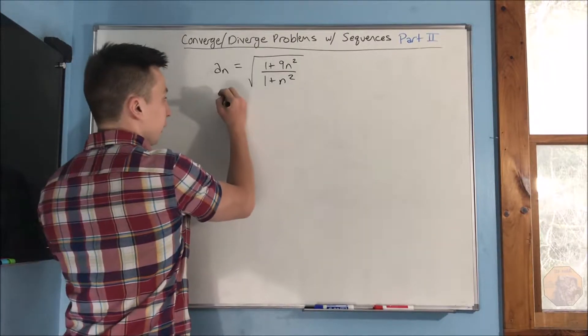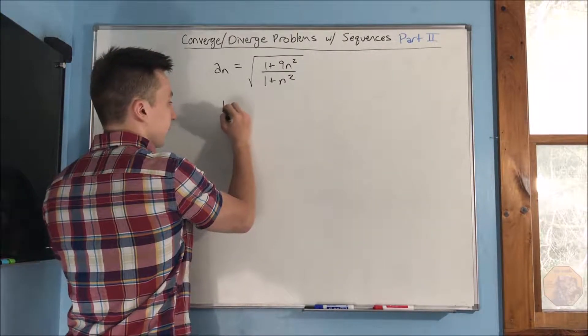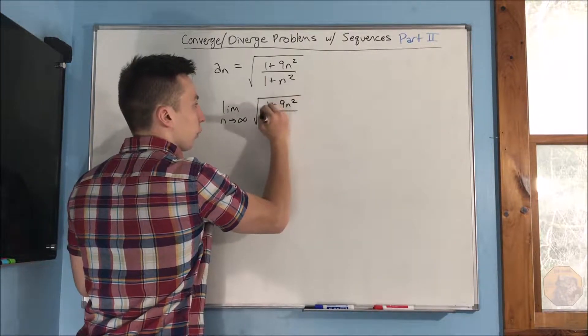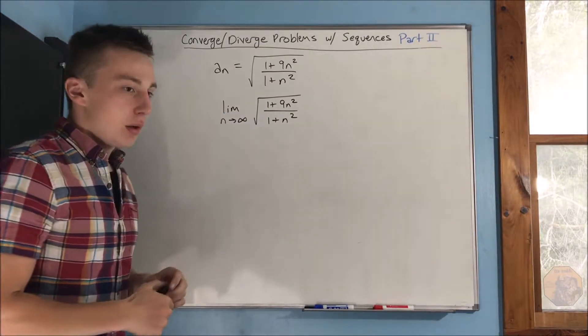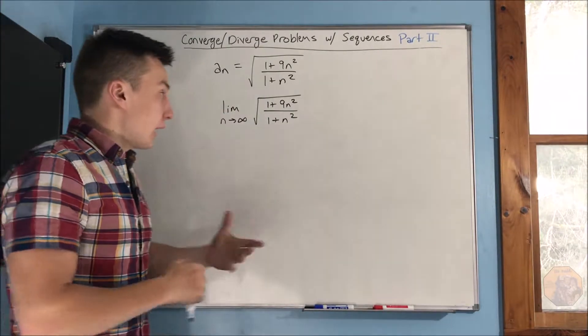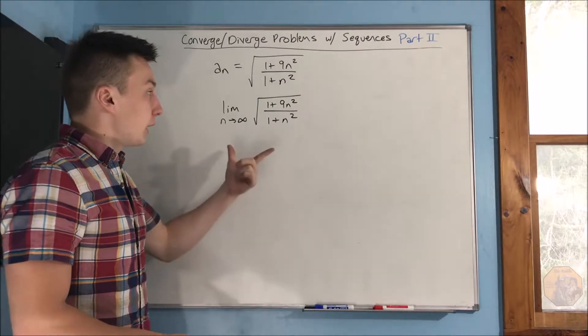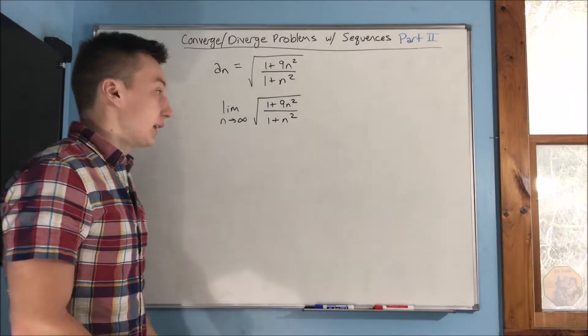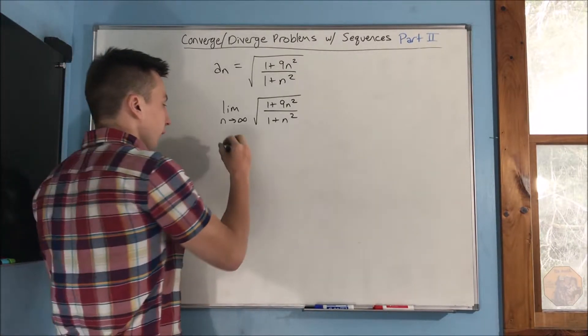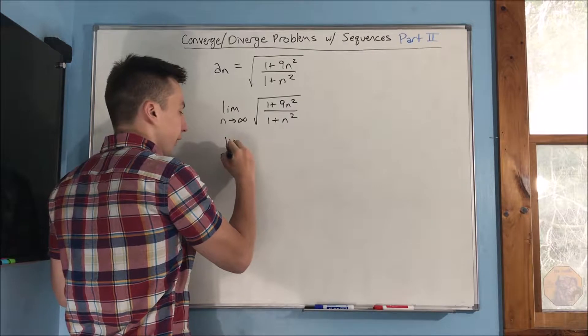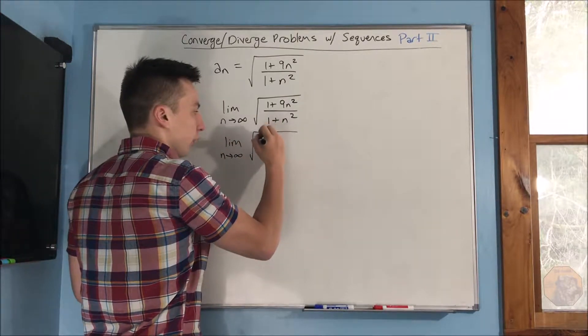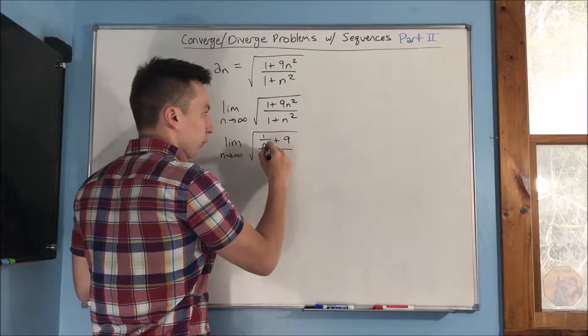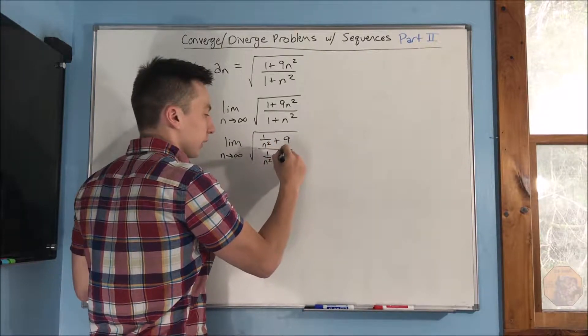Okay, so all we need to do is just take a limit here. We take a limit, as n approaches infinity, the square root of 1 plus 9n squared over 1 plus n squared. All we have to do to see what's going on here, some of you may already see it, is if we divide everything on the inside of the square root by n squared, you can start to see what's going to happen. If we do that, we get the limit as n approaches infinity, the square root of 1 over n squared plus 9 over 1 over n squared plus 1.